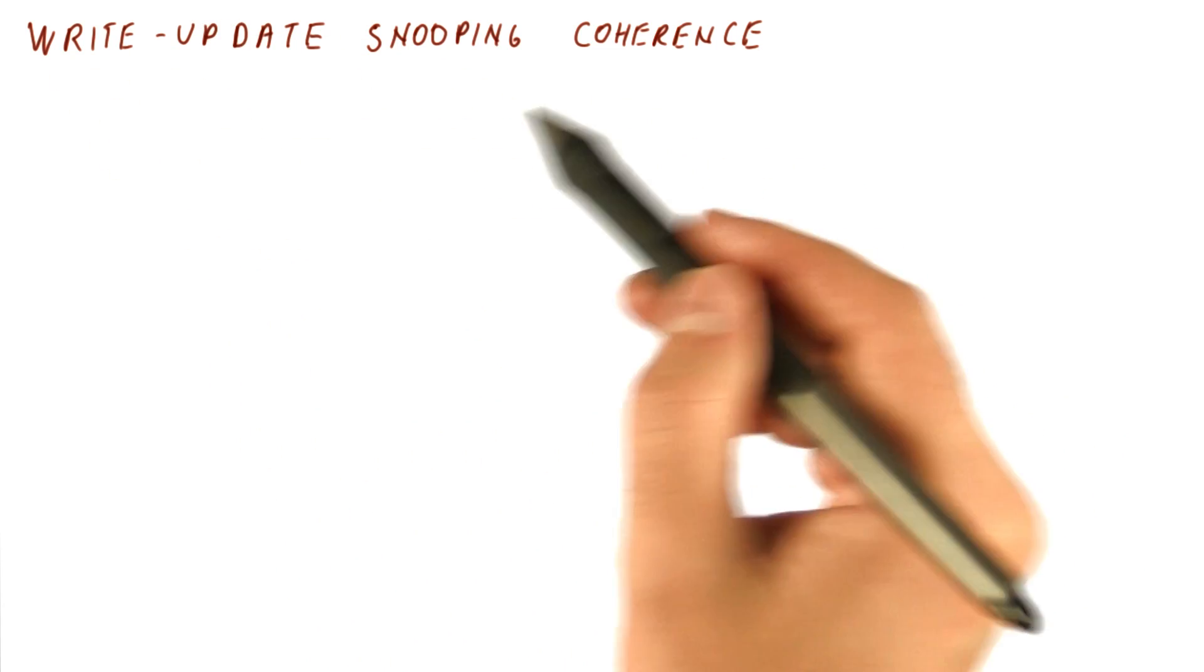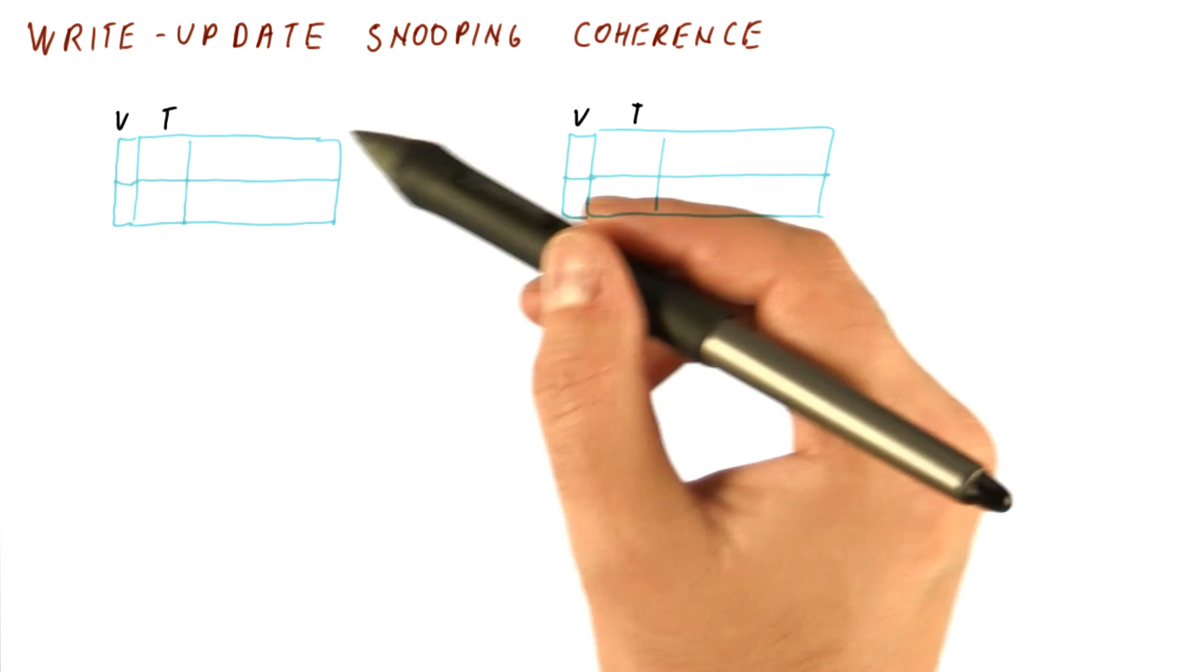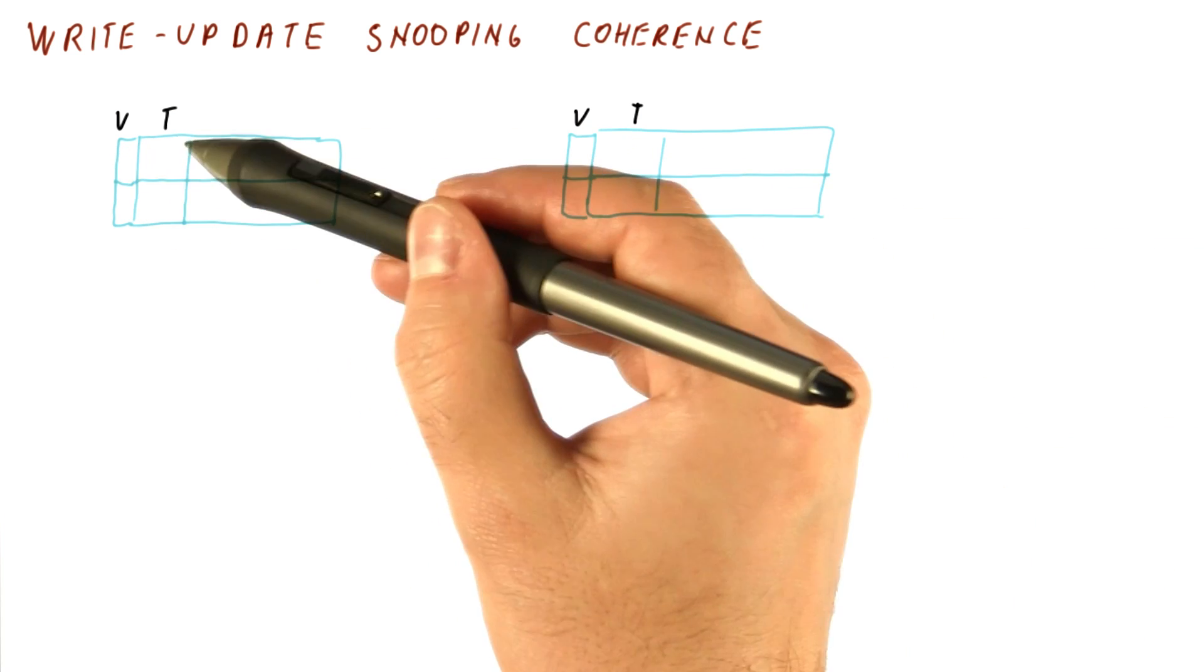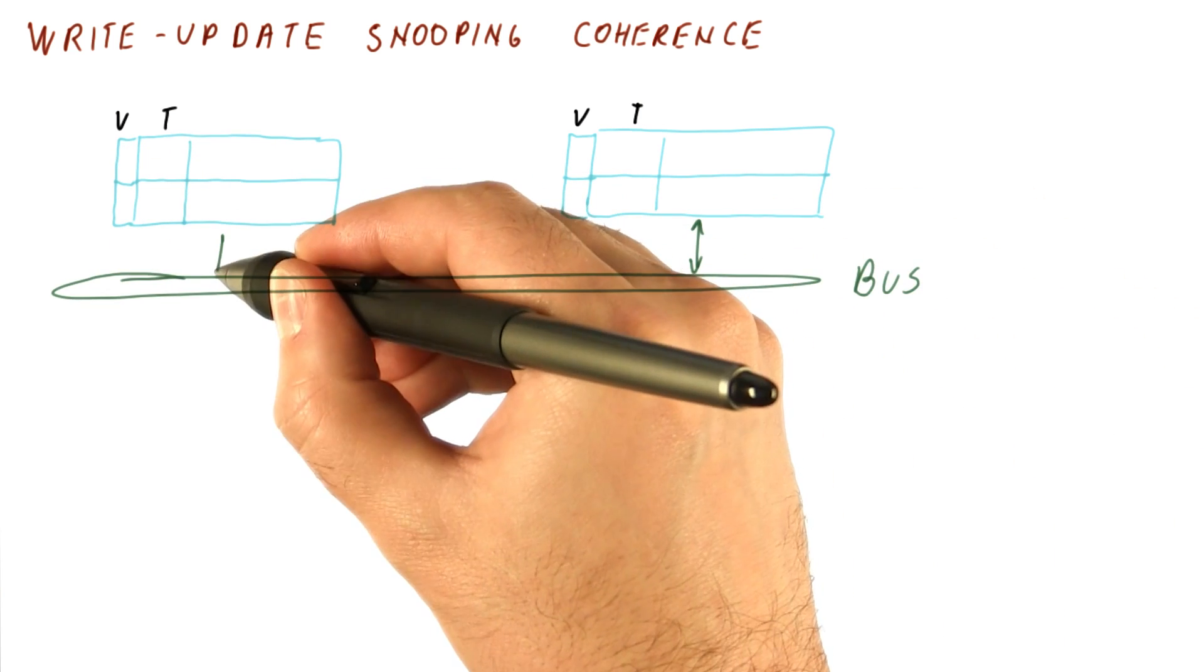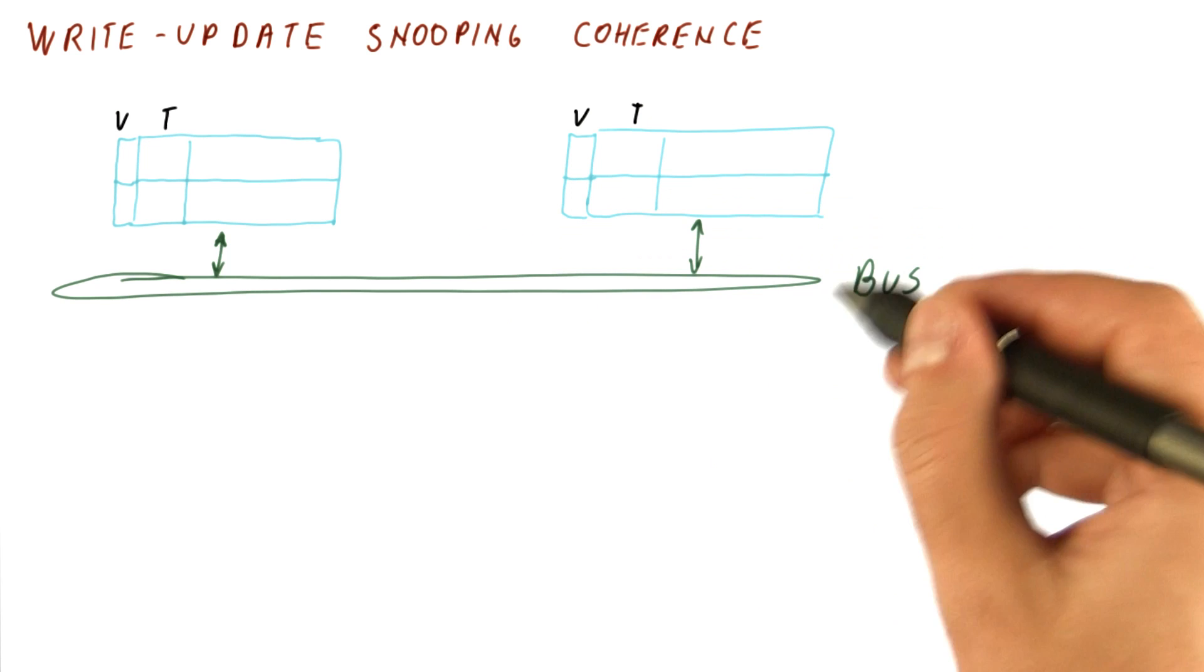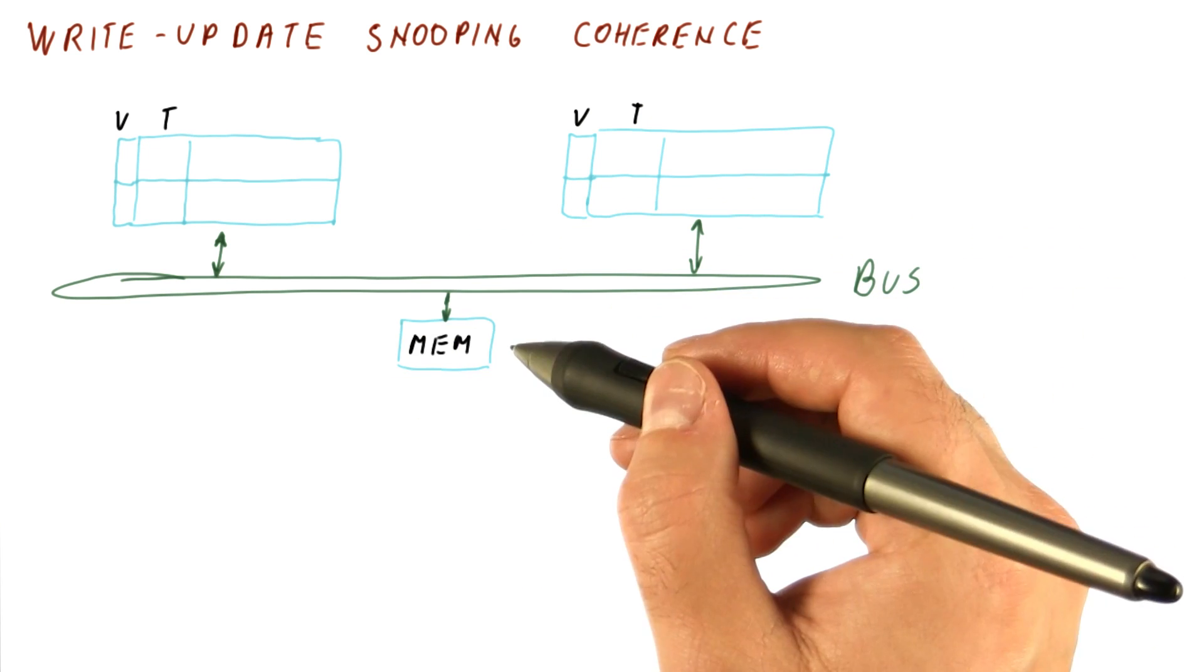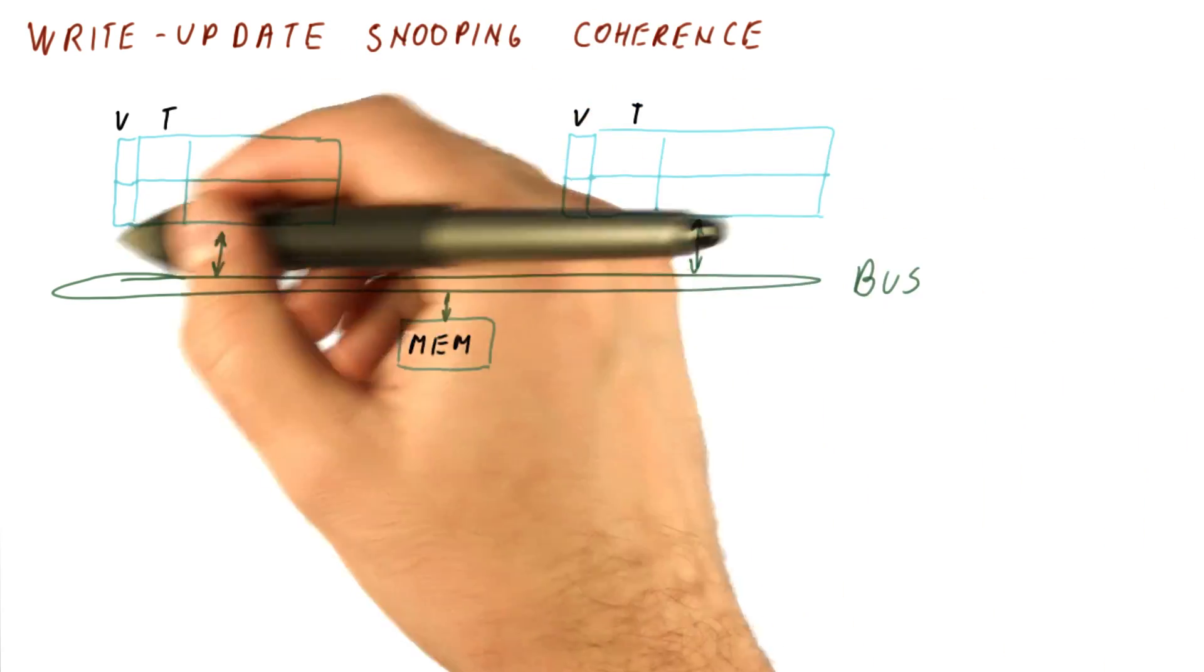Let's look at write update snooping coherence first. We'll look at two caches, each with two blocks containing a single valid bit per block, a tag, and the data. Both caches are connected to the same bus, which also connects to memory. The caches are initially empty, so the valid bits are all zero.